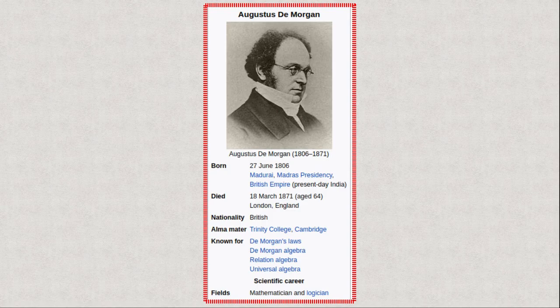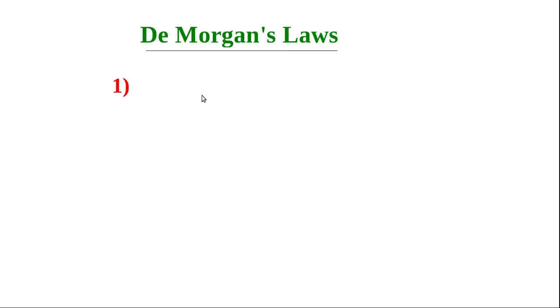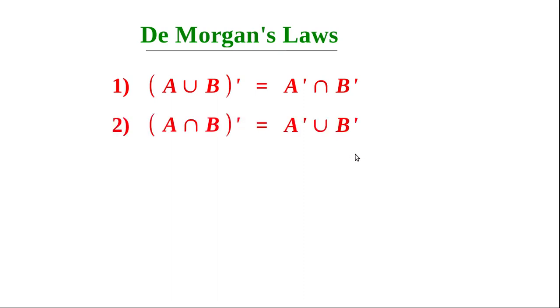This is a photo of Augustus De Morgan, a British mathematician born in India — in Madurai, Tamil Nadu — in 1806, who died in 1871, aged 64. He was the first person who invented the theorem: A union B whole dash equals A dash intersection B dash. We therefore call it De Morgan's Law. Write in your notebook De Morgan's Laws — First Law: A union B whole dash equals A dash intersection B dash. Second Law: A intersection B whole dash equals A dash union B dash.